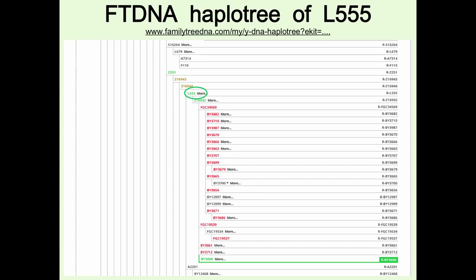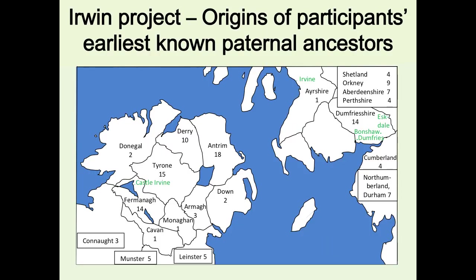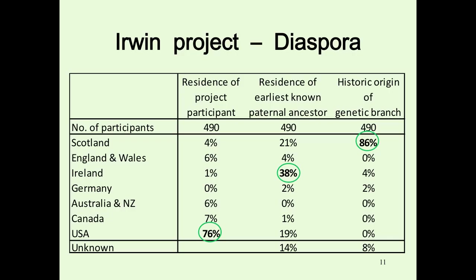The surname possibly comes from the sign of Irvin in Ayrshire. In the plantation period, relatively affluent Irvins migrated to Castle Irwin, but the vast majority were scattered all over the north. Interestingly, 76% of our study live in the USA; 38% say they had Irish ancestry, but the study shows 86% actually came from Scotland.